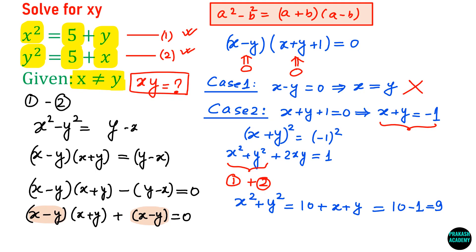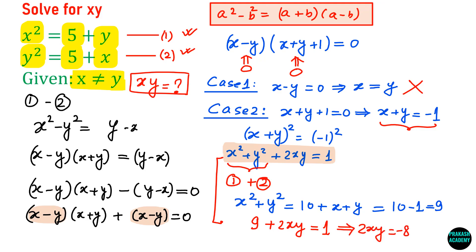Now I can plug this value into the equation x squared plus y squared plus 2xy equals 1. Substituting x squared plus y squared equals 9, we get 9 plus 2xy equals 1, which means 2xy equals minus 8, and therefore xy equals minus 4.